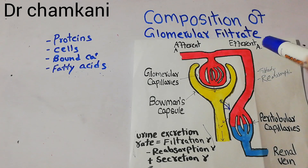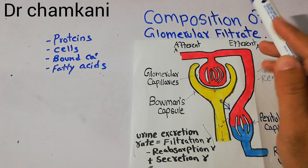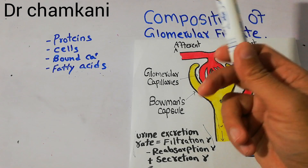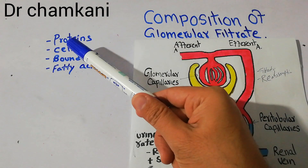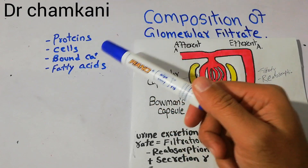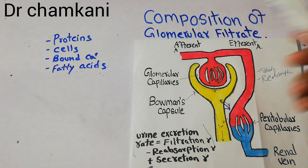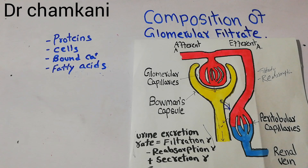So the final composition of glomerular filtrate will have all the components of plasma except proteins, cells, calcium bound to proteins, and fatty acids bound to proteins. That's all about the composition of glomerular filtrate.